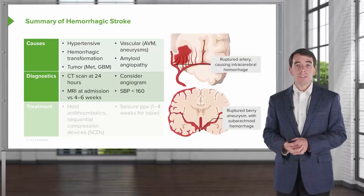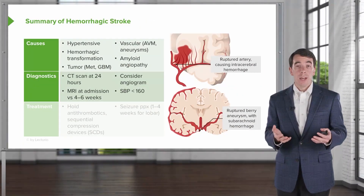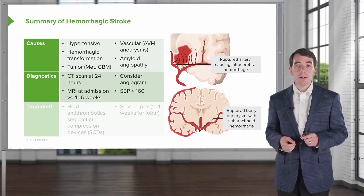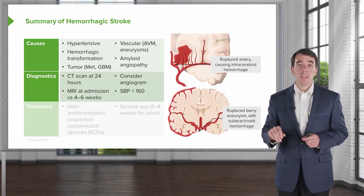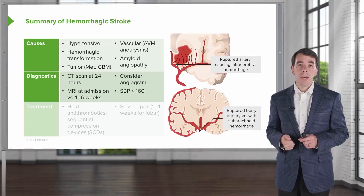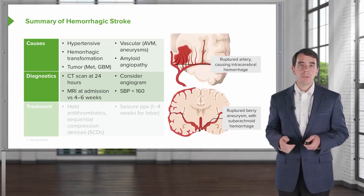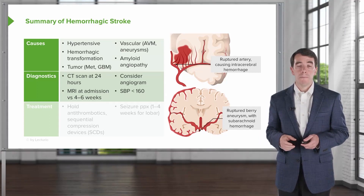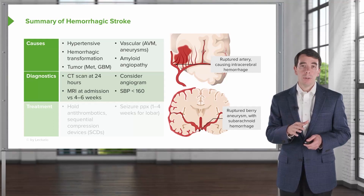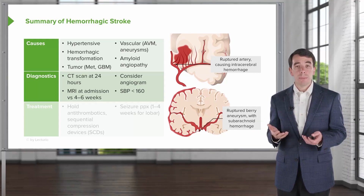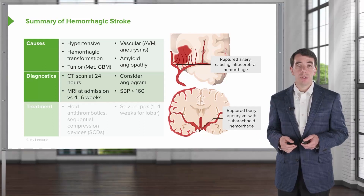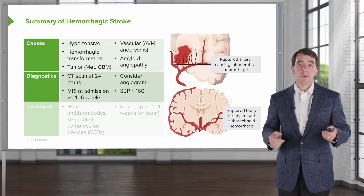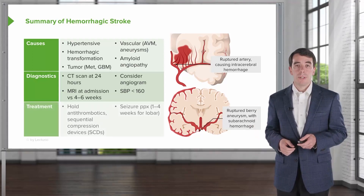The diagnostic workup for hemorrhagic stroke is quite different from that for ischemic stroke. With ischemic stroke, we're looking for why the clot may be there. With hemorrhage, it's happened and we're making sure it doesn't get worse. Patients undergo a non-contrast head CT somewhere between 6 and 24 hours to make sure the bleeding isn't expanding and the patient doesn't require further intervention. MRI may be considered if we're looking for a tumor. Vascular imaging or angiography — non-invasive or invasive — can look for a vascular lesion. We also manage blood pressure to reduce the risk of further expansion of the hemorrhage.